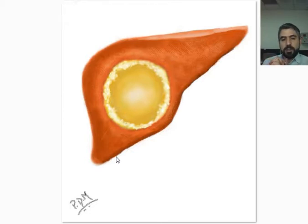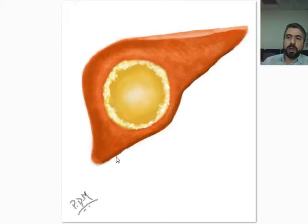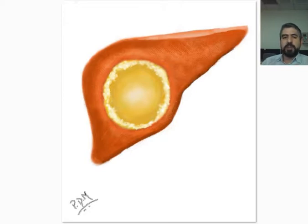Hydatid cysts can occur in any size, anywhere, and in any number — as a single cyst or as multiple innumerable cysts. It is very common in the Middle East and areas where there are sheep, because it is transmitted by the fecal material of sheep.